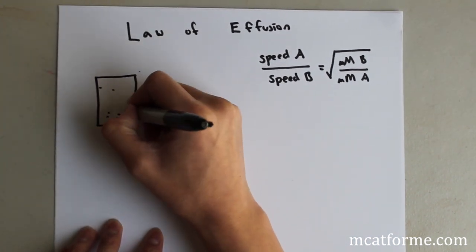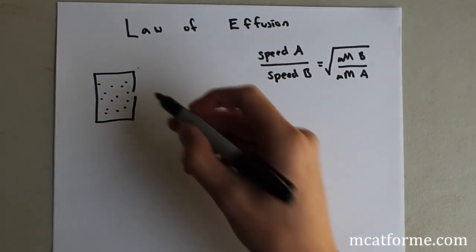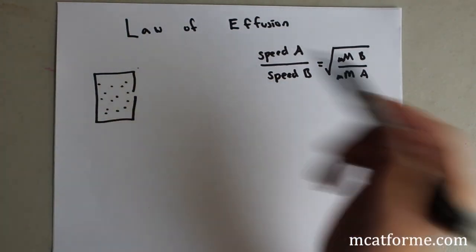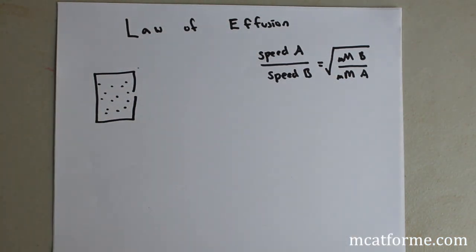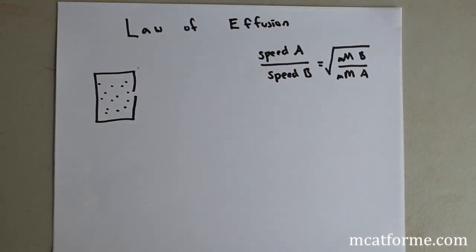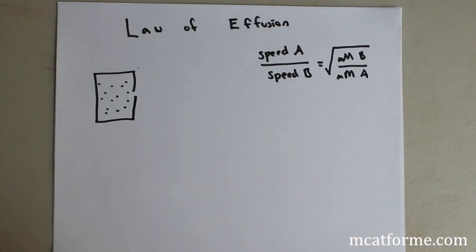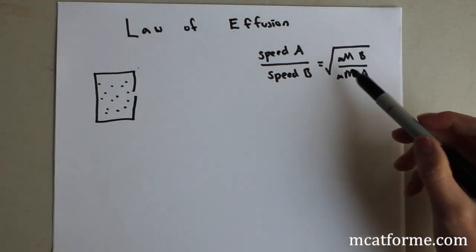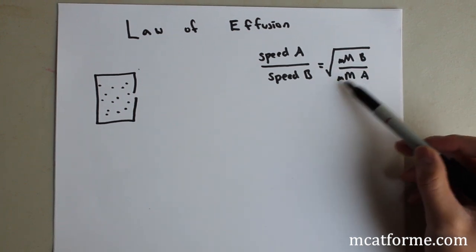So you're going to have this container, and they're going to say, now I poke a small pinhole within the container, and these will exit the container. And you have to figure out what the speed of A and what the speed of B is proportionally. So this is the equation right here, the speed of A over speed of B, these are two different molecules, is equal to the square root of the molar mass, that's with this mm of B over mm of A.